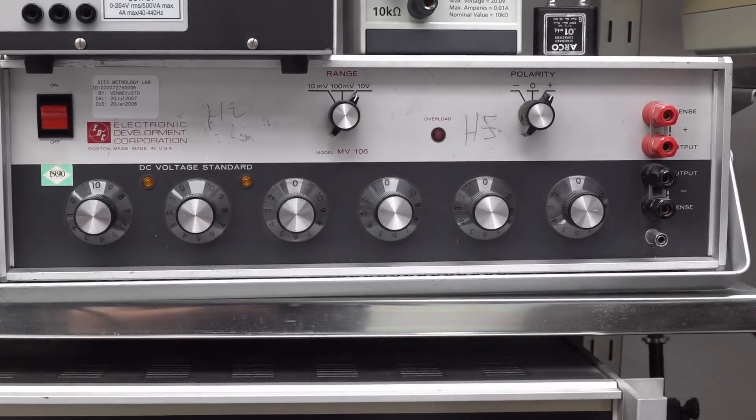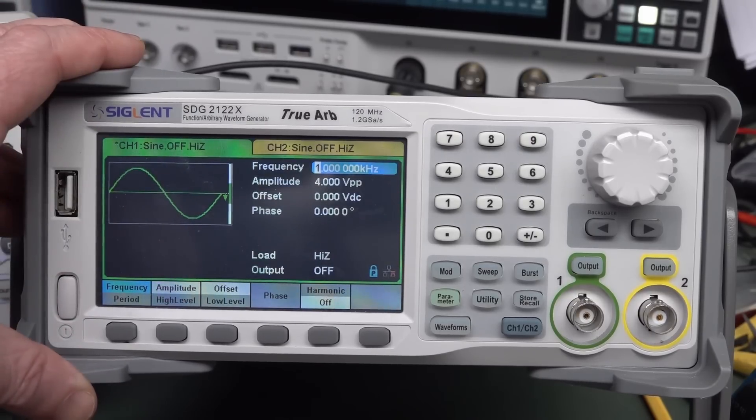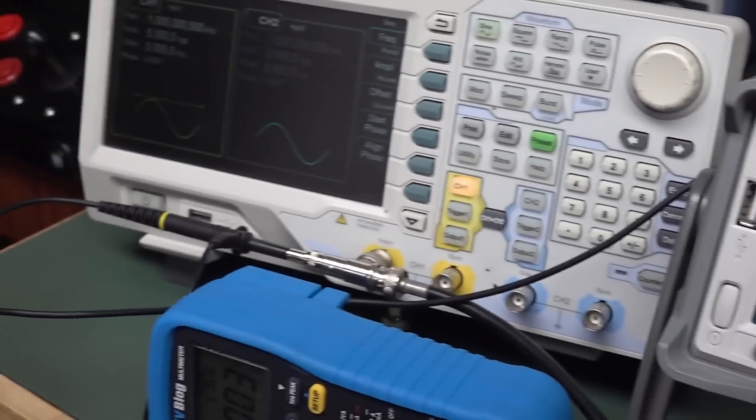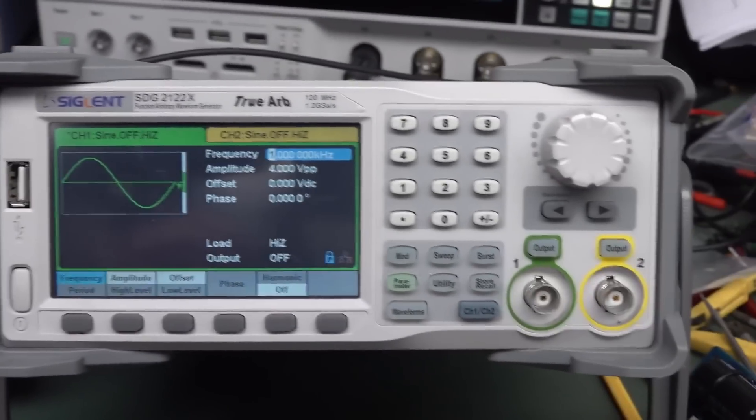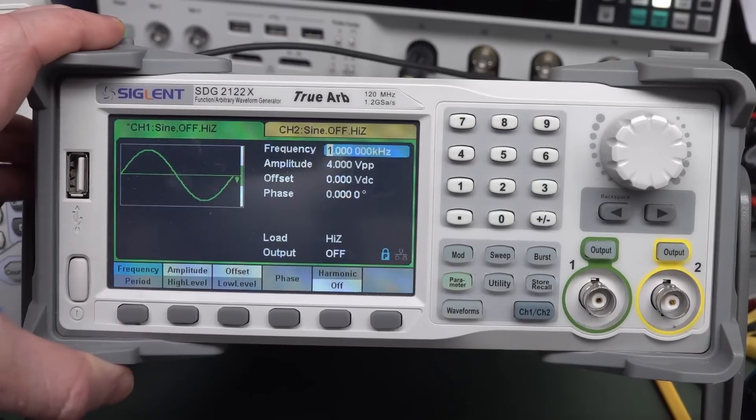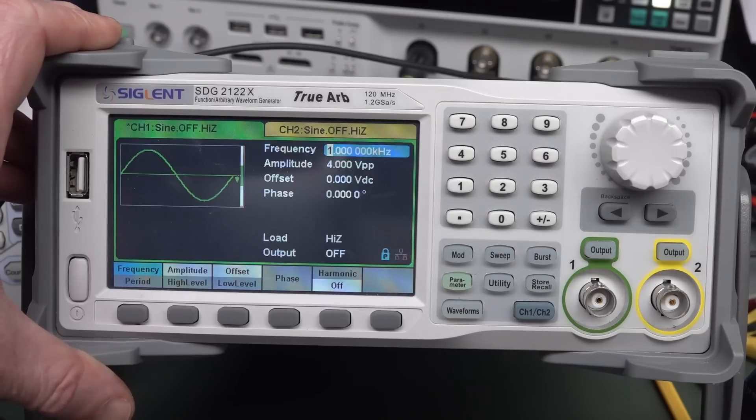Well, you might already have something. Any decently equipped lab these days should have an arbitrary waveform generator. It doesn't have to be as quite advanced as this, you can get them quite cheap. Whether it's the Siglent or the Rigol like this, or one of the cheap eBay jobbies. In most cases, you should actually be able to use your arbitrary function generator to generate precisely small-stepped voltages.